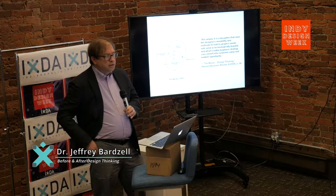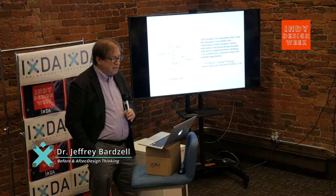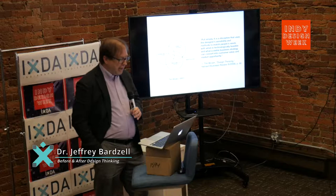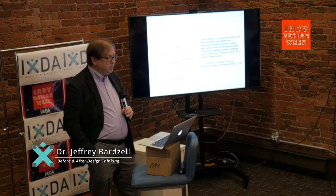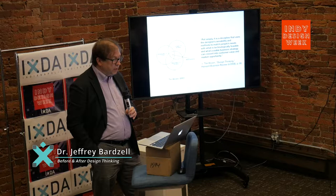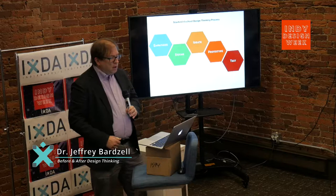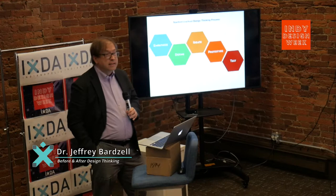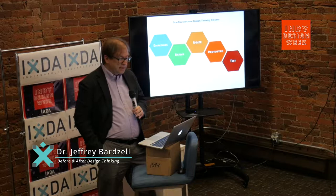Two diagrams from this era have been especially widely circulated. One was Tim Brown's three-circle diagram of desirability, viability, and feasibility, which spread around so much online that some people don't even know where it came from. He wrote that design thinking is a discipline that uses the designer's sensibility and methods to match people's needs with what is technologically feasible and what a viable business strategy can convert into customer value and market opportunity. The other widely circulated diagram is the standard d-school representation of the design thinking process — to me, it looks a lot like good old-fashioned user-centered design as described in HCI textbooks for decades. It's not a radical new vision, but rather a model of a widespread and well-understood practice.